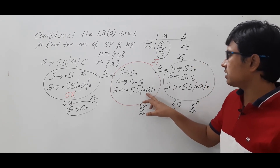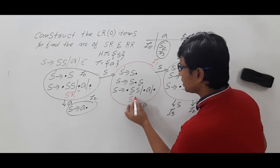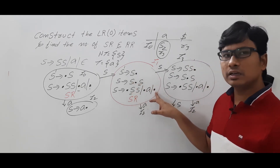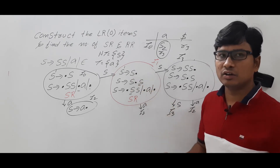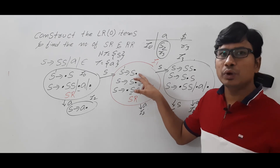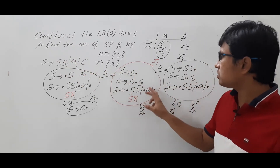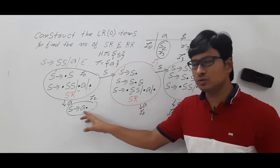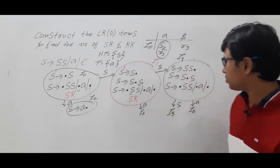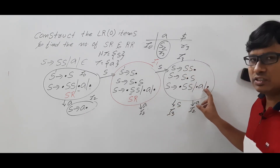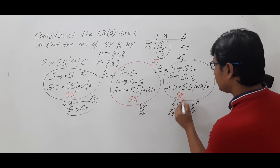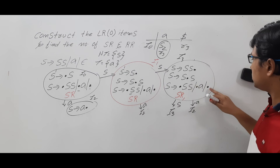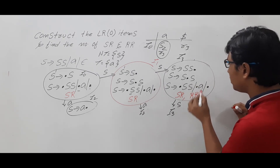Again, there is a shift move and a reduce move, so there is again an SR conflict. Many students will think that this is a reduce move and this is a reduce move, and consider this an RR conflict. No — you should not consider that because this is an augmented production, which we took extra and is not in the given grammar. So this is not an RR conflict. Come to I2 — as there is only one reduced move and no shift move, SR conflict is not possible and RR conflict is not possible. Now I3 — there is a shift move and a reduced move, so there is an SR conflict. And this is a reduced move, and since this is part of the given grammar, it is also a reduced move, so it consists of an RR conflict.